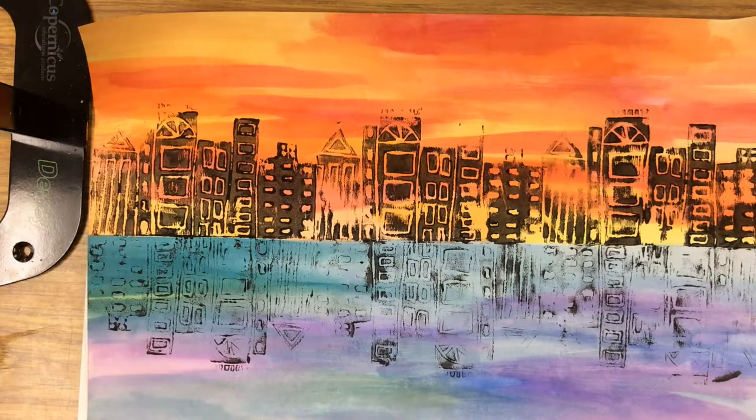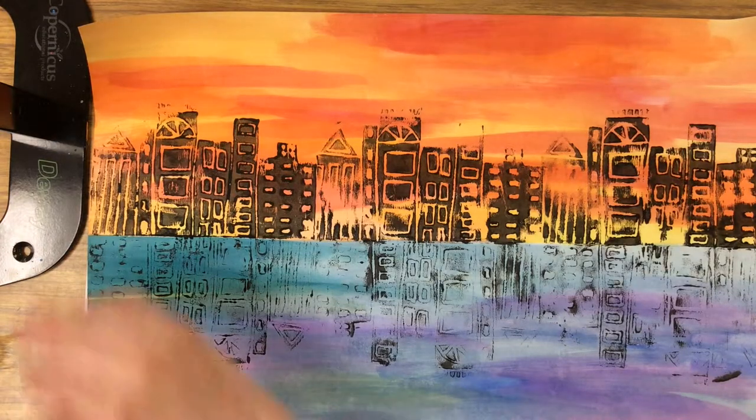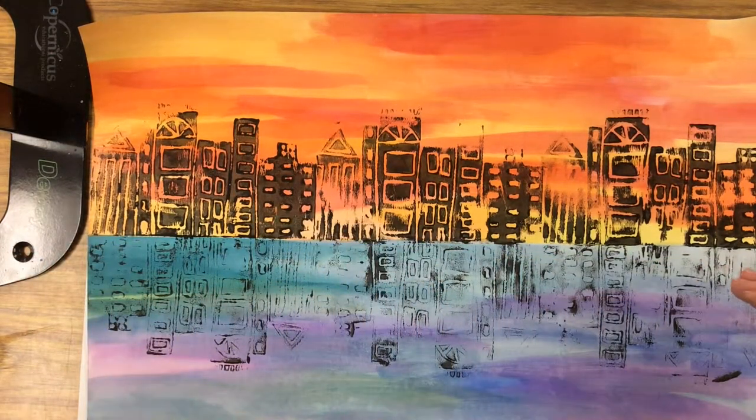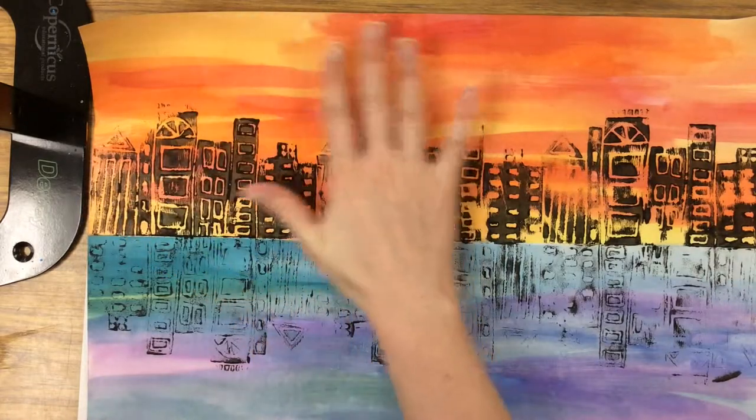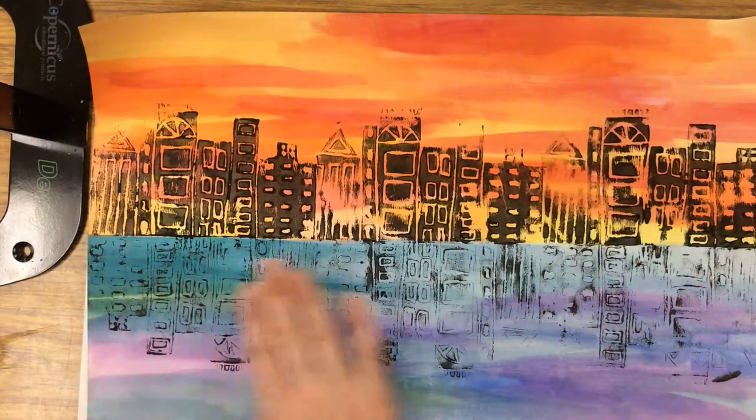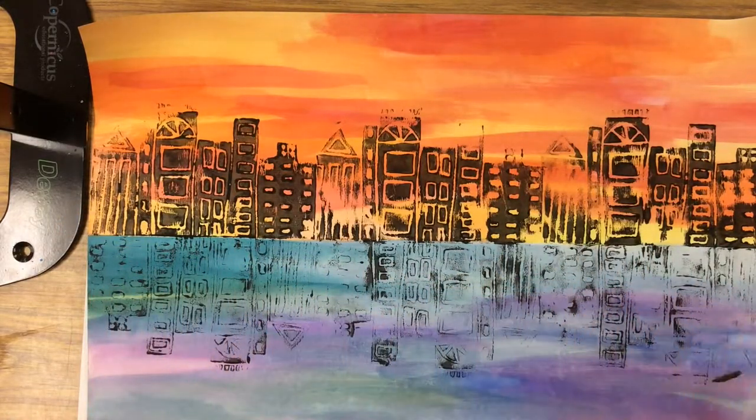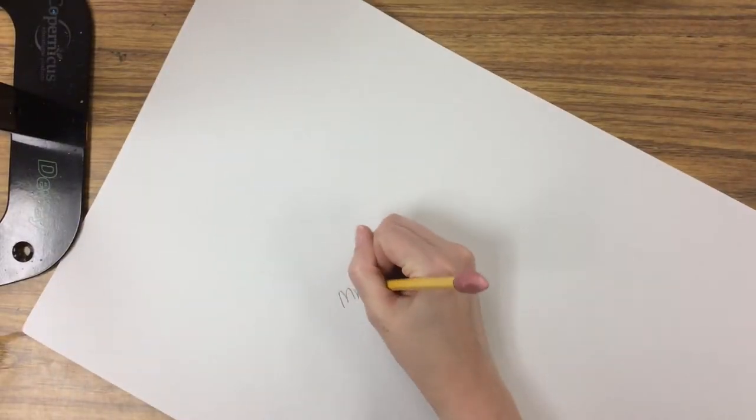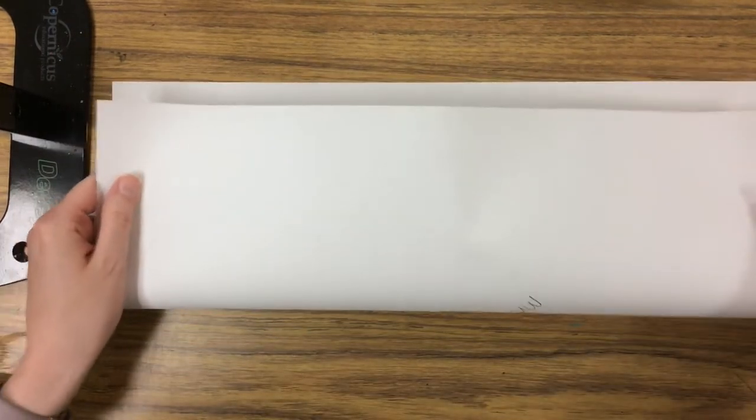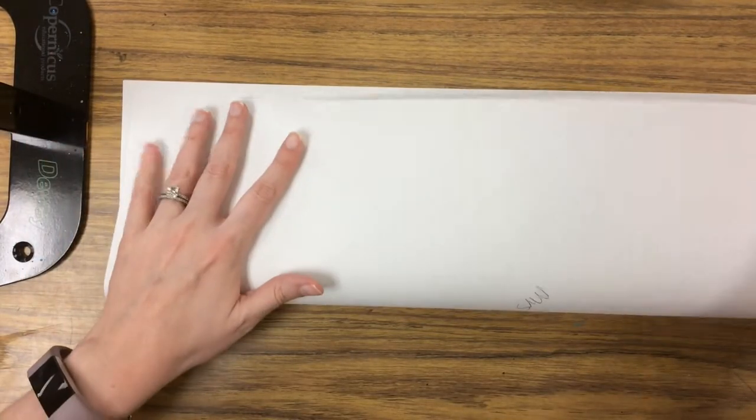To begin our city skyline reflection, we first need to divide our paper in half horizontally and paint a warm sky and cool water at the bottom. I'm going to take my 12 by 18 larger paper, write my name on the back, and then fold it in half hot dog style.